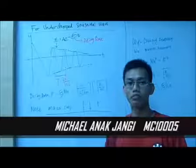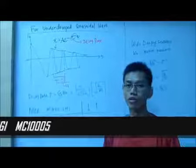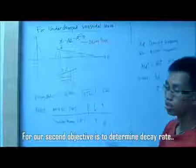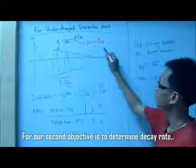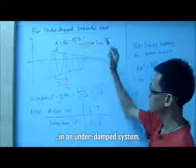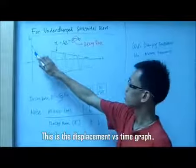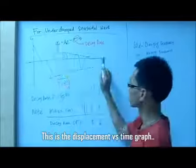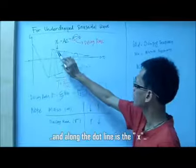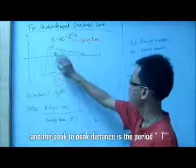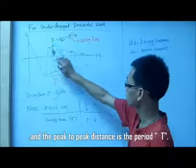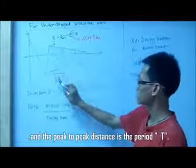The second objective is to determine the decay rate in underdamped system. This is the displacement versus time graph and along the dotted line is the S and the peak distance. The peak distance is the period T.